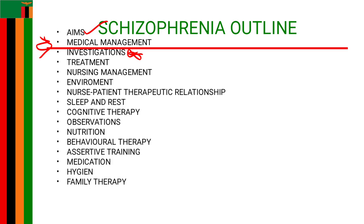Once you have five investigations, you move on to treatment. This is a psychotic disorder, so you are supposed to mention at least three specific drugs. The first drug we can prescribe in schizophrenia is chlorpromazine, which can be used in schizophrenia, mania, even anxiety disorders and many others. The dose is 25 milligrams three times a day, or 75 milligrams at night.